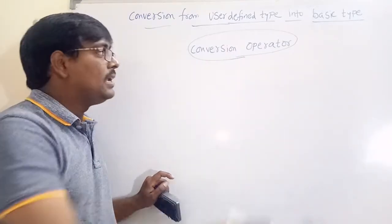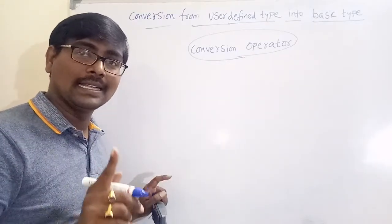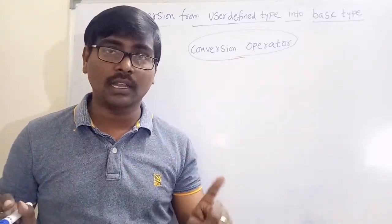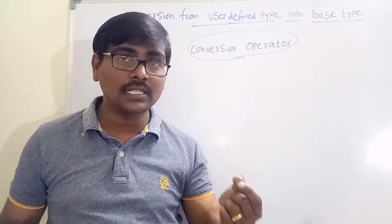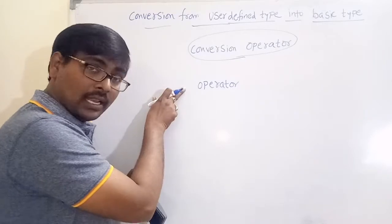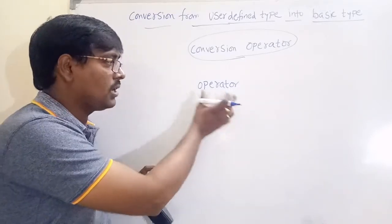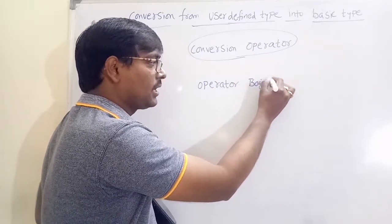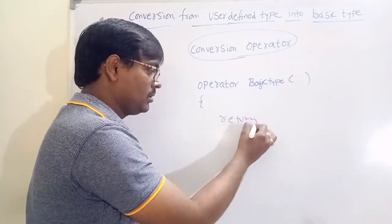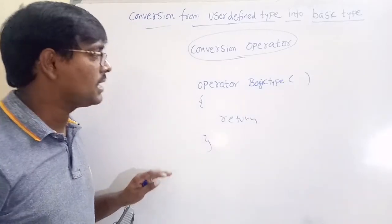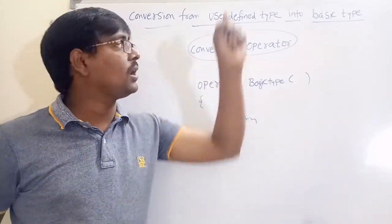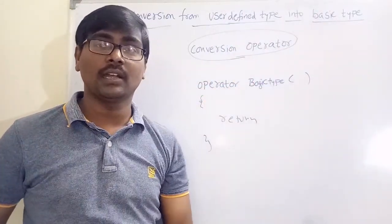What is the syntax? It is similar to an operator function, but it does not contain any return type — not even void — but it does have a return statement. The syntax is: operator, without any return type, followed by the basic data type — that is, here we can write either int, float, char, etc. — and some return statement. This is the syntax for creating a conversion operator, also called a cast operator, to convert from user defined data type into basic data type.